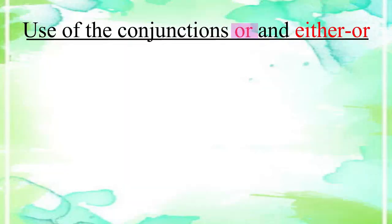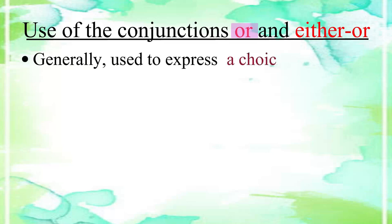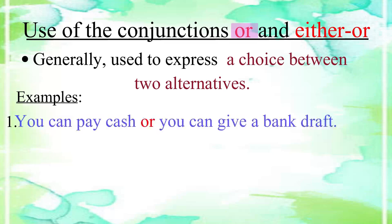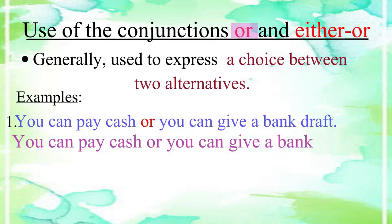The conjunction 'or' expresses a choice between two alternatives. For example: 'You can pay cash or you can give a bank draft.' This sentence says that you can pay cash if you like, and in case you don't, you can give a bank draft. We see that the conjunction 'or' is expressing a choice between two options.